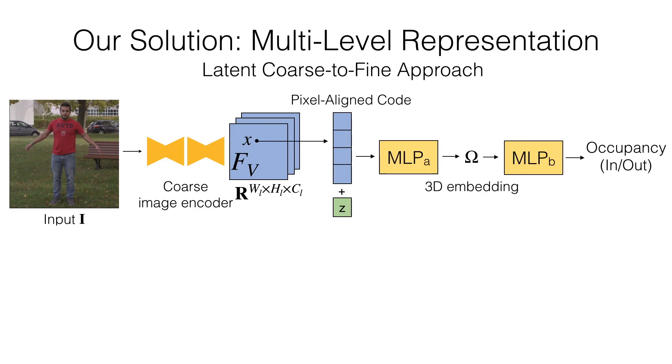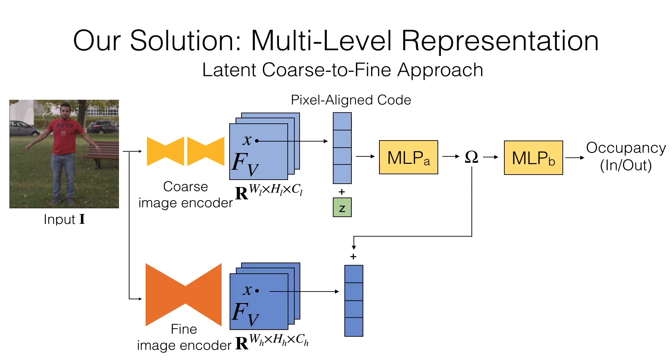And we view the intermediate latent feature of the MLP as a 3D embedding. And the fine image encoder takes the 3D embedding learned from the coarse-pyfu instead of the query depth value z. This way,